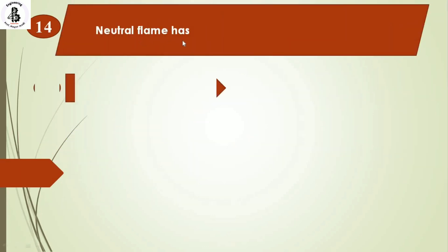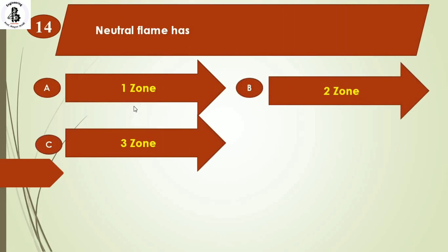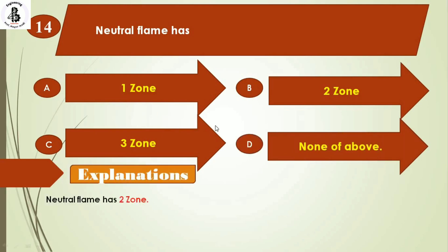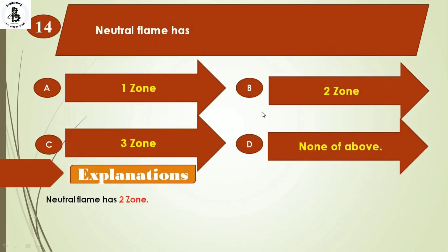Neutral flame has: Option A: 1 zone. Option B: 2 zones. Option C: 3 zones. Option D: none of the above. A neutral flame has 2 zones — the inner cone and the outer envelope. If it is a carburizing or reducing flame, it has 3 zones. For a neutral flame, it is 2 zones. So the right answer is option B.